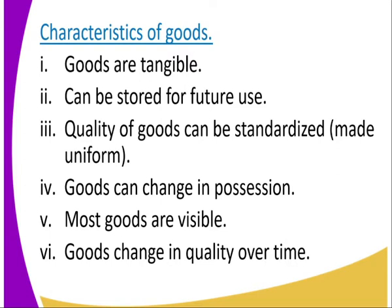Number five: goods are visible — you can see them and also touch them. A table, a book, a laptop, a computer — they are all visible. Goods also change in quality over time. For example, the computers that were used when they first started are no longer the same as today; they keep on changing their quality over time.